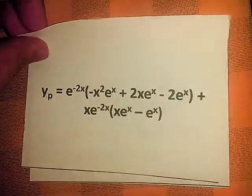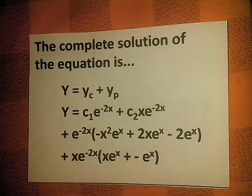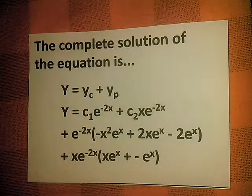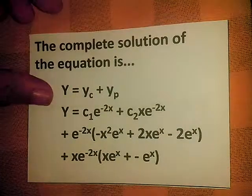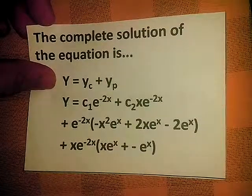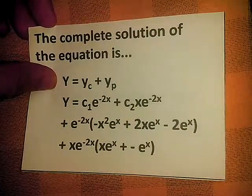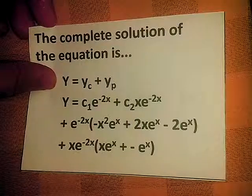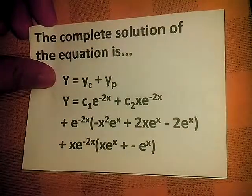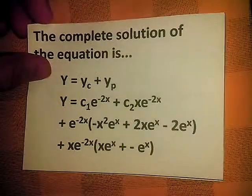Substituting yp into the complete solution, which is y = yc + yp, we get y = c1·e^(-2x) + c2·x·e^(-2x) + e^(-2x)·(-x²·e^(x) + 2x·e^(x) - 2e^(x)) + x·e^(-2x)·(x·e^(x) - e^(x)).